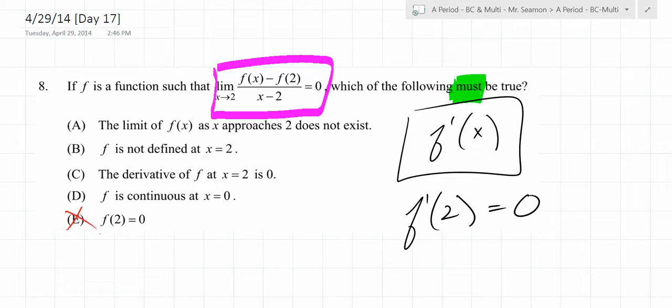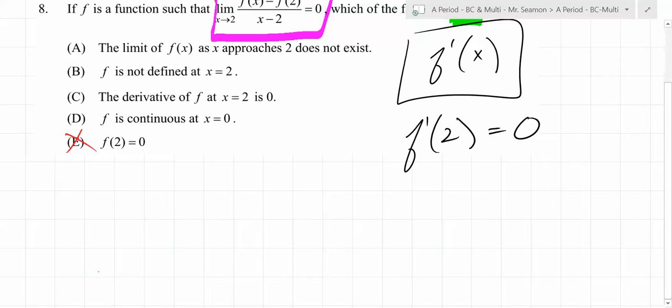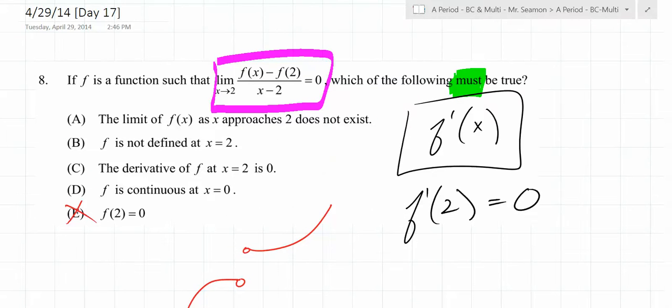Do we have any idea what the function value is at that point? No. Does it have to be continuous at x equals 0? Not necessarily. You could have a function that jumps. You have no idea what's going on at x equals 0. The derivative of f at x equals 2 is 0? Yeah, that's the limit definition of derivative. So C is the answer. Oh, did I make a mistake? Zero, zero. That is a super common mistake, not to kill the constant.